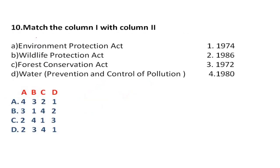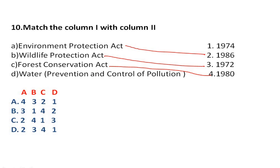Match the following — Column 1 with Column 2. Environment Protection Act is 1986; Wildlife Protection Act is 1972; Forest Conservation Act is 1980; Water Prevention and Control of Pollution Act is 1974. So the right answer will be D: A-2, B-3, C-4, D-1. This type of question is asked in all exams — please remember.